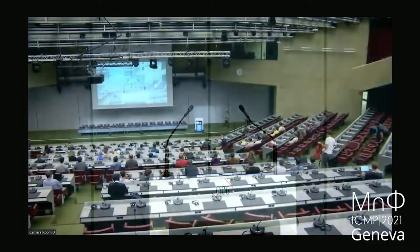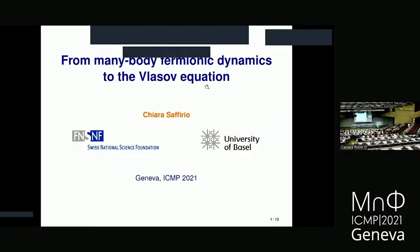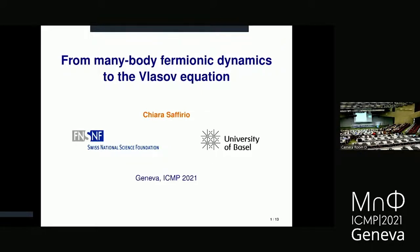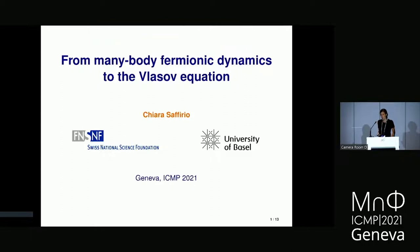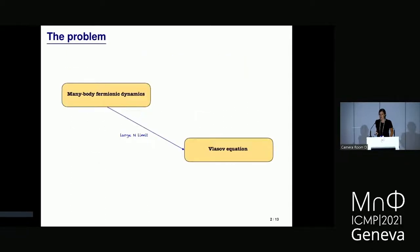Thank you. I want to start by thanking the committee for the prize and the organizers of ICMP for giving me the opportunity to present my work. The problem I want to look at today is really at the crossroads between quantum and classical mechanics: how to obtain the Vlasov equation, a classical kinetic equation widely used in plasma physics and astrophysics, from many interacting fermions. Mathematically, this is modeled by taking the limit as the number of particles goes to infinity in the mean-field regime, approximating the many-body dynamics by a one-particle effective theory, passing through the Hartree-Fock equation.